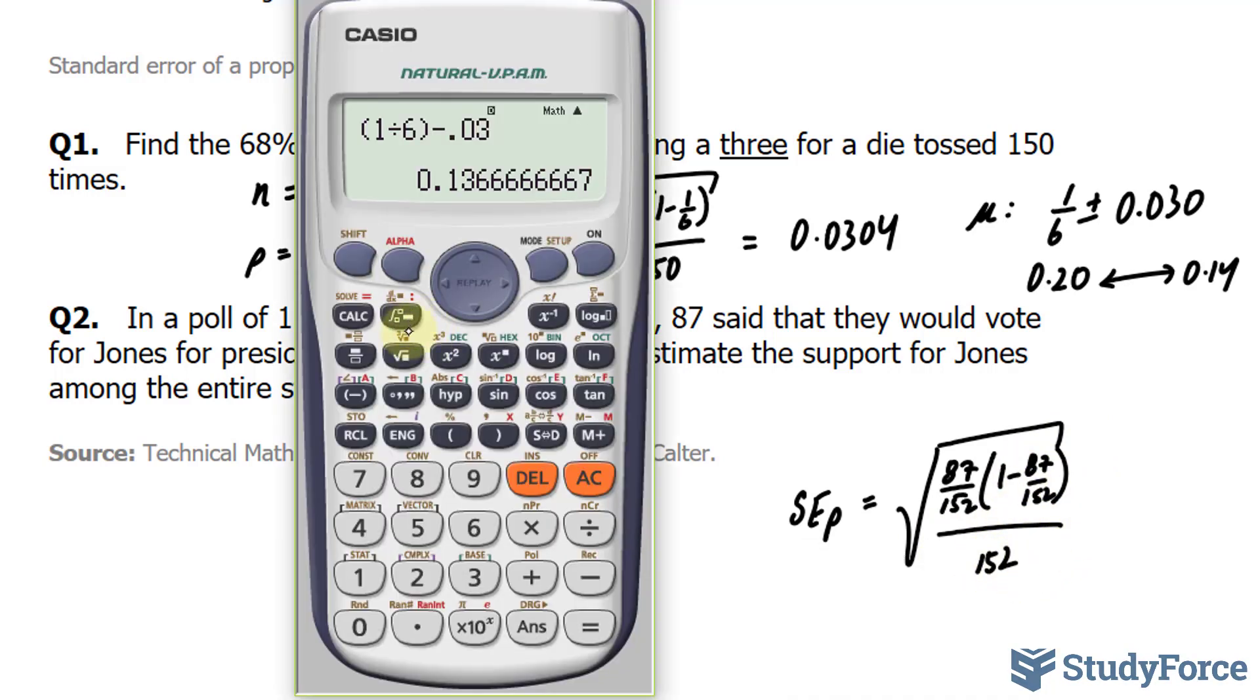Let's use our calculator. And being as careful as we were before, I'll bracket this whole numerator, and then bracket this fraction, 87 over 152, 1 minus 87 over 152, close the bracket for the top, and divide by 152. This will give me 0.04.